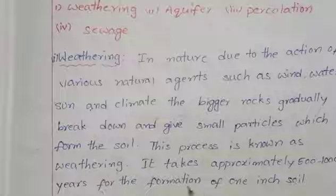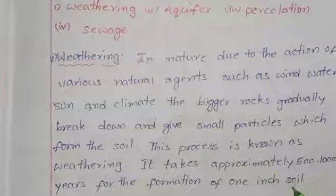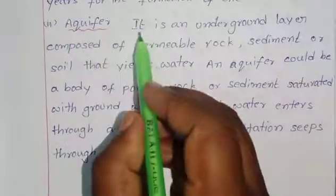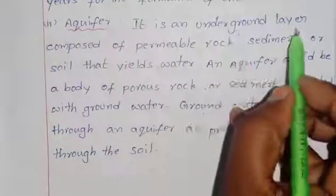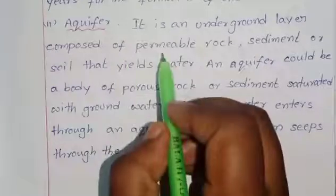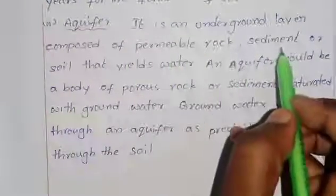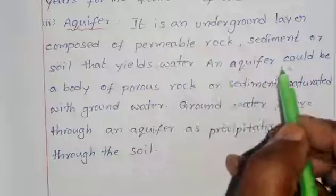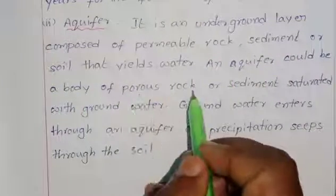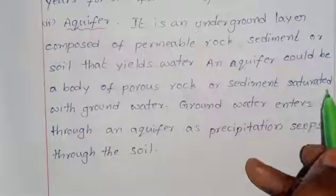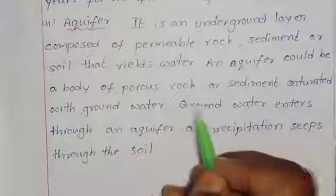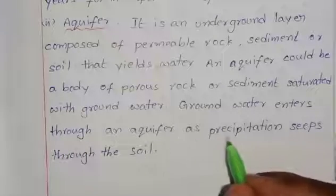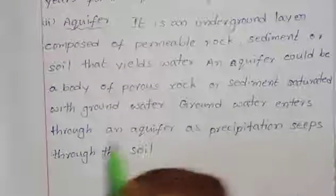2) Aquifer: An aquifer is an underground layer composed of permeable rock, sediment, or soil that yields water. An aquifer could be a body of various rock or sediment saturated with groundwater. Groundwater enters an aquifer as precipitation seeps through the soil.